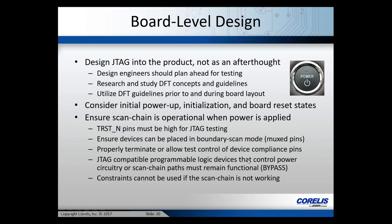Ideally, don't use CPLDs or FPGAs to route your scan chain paths to keep them fully testable with JTAG. Also note that constraints can't be used if the scan chain isn't working — you can use fixed high and fixed low constraints during test vector development, but you can't apply a constraint if the scan chain is broken. It's a chicken-and-egg problem.